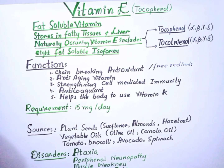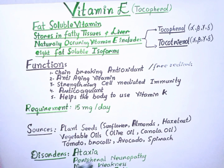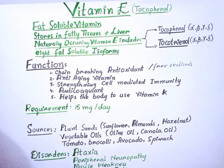Deficiency of Vitamin E is very rare. It can be caused by fat malabsorption disorders or genetic abnormalities. One disorder is ataxia, which means abnormal or uncoordinated movement. Other deficiency symptoms include peripheral neuropathy — damage to nerves outside the central nervous system — muscle weakness, and damage to the retina of the eye.